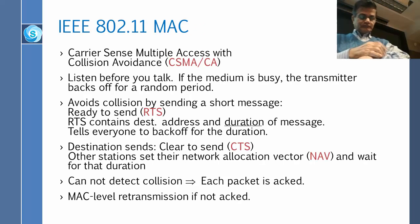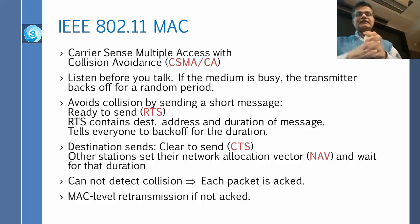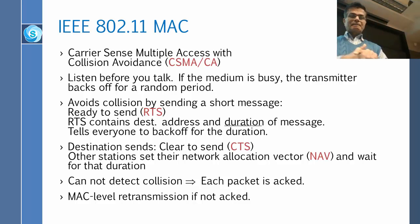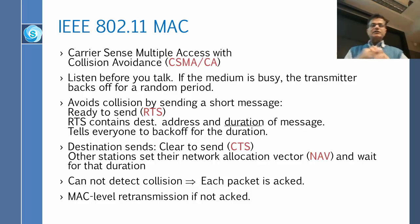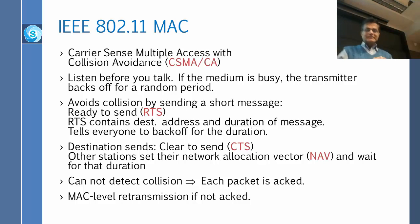MAC is media access control, and the media access control here is CSMA/CA. There is still carrier sense — you don't even send your RTS if you hear somebody else. You sense the carrier, you listen to the carrier, and if somebody is speaking, you don't. So CSMA is still there. But how do you avoid collision? You avoid it by asking the receiver. Carrier sense multiple access means: listen before you talk. If the medium is busy, you back off — you draw a random number and say 'I will try again after such time.'